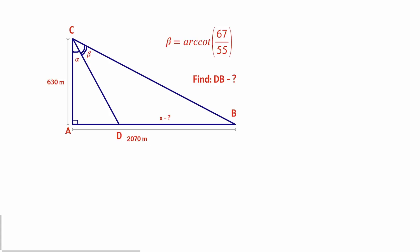Hello and welcome to my daily math YouTube channel. Today let's take a look at a very interesting problem. We have a triangle ABC with side AB equals 630 meters and side BC equals 2070 meters. We're also given that angle beta is arc cotangent of 67 over 55, and we need to find the length of segment BD.